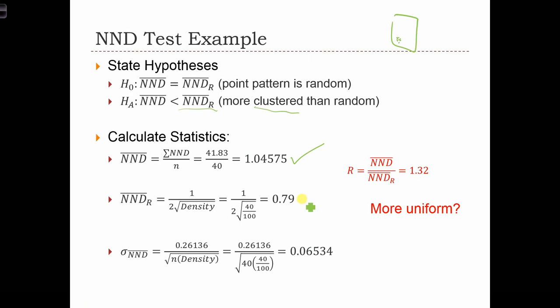And we can calculate NND bar R, and then standard error of the NND bar. And now all we're going to have to do is calculate the z-score.